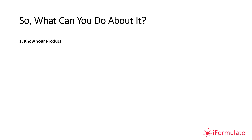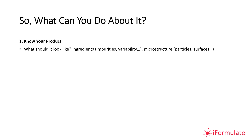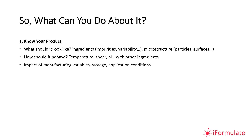Once you've identified these, the first important thing is to know your product: understand what you've got, what it should look like, what ingredients are present, what impurities those ingredients might have, the degree of variability, the expected microstructure, and how it should behave in response to temperature, shear, pH, or other ingredients. Also consider the impact of manufacturing variables during storage or application, and possible mechanisms for product failure.